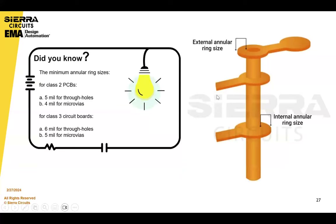That's okay, but make sure your fabricator can build to that. If you're building anything with class three, annular ring becomes definitely a concern for all fabricators. Here are the guidelines that Sierra has for class three, which are pretty much universal to all fabricators. Knowing your annular ring requirements for your class three board is critical before you start your layout.